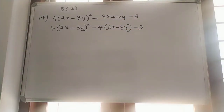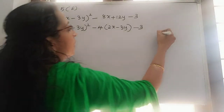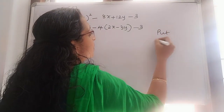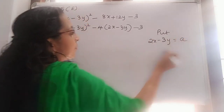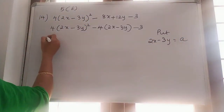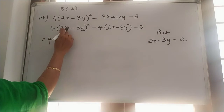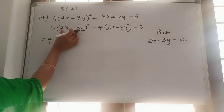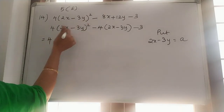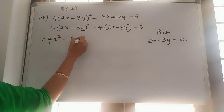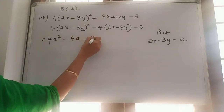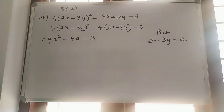Same as the previous question, 2x minus 3y we can write it as a. Put 2x minus 3y as a. So it will be 4 into a square minus 4a minus 3, giving us 4a square minus 4a minus 3.